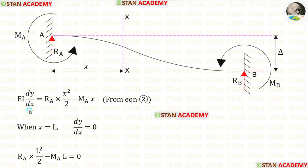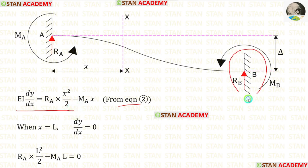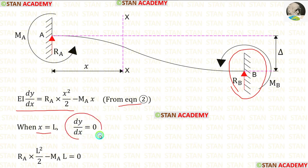Now, let us take the second equation — that is the slope equation. In point B, there is a fixed support. In the fixed support, there will be no slope. So, when x is L, dy/dx will be 0.